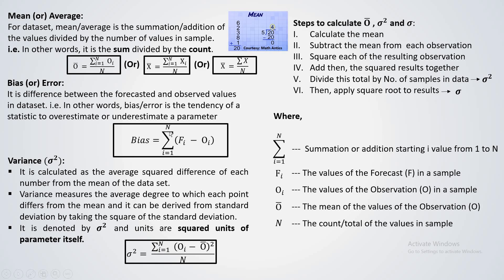For example, if your model predicts values somewhat higher than your observed data, you can say it is overestimation. Similarly, if your model predicts somewhat lower values than your observed data, you can say your model is somewhat underestimating. That is what we call underestimation or overestimation.